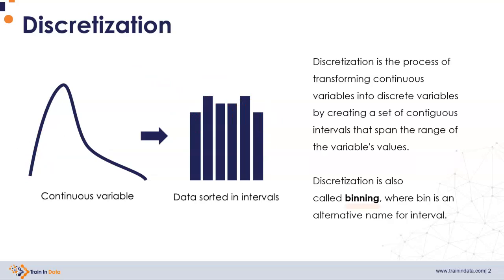You've probably also heard the term binning — it's an alternative name for discretization, where a bin is each one of these intervals. It is common to treat the discretized variable as if it were a categorical variable, and you will often see discretization coupled with one-hot encoding or ordinal encoding.